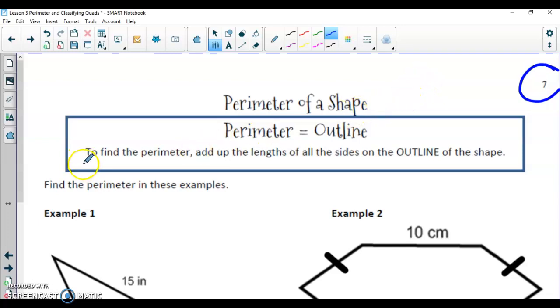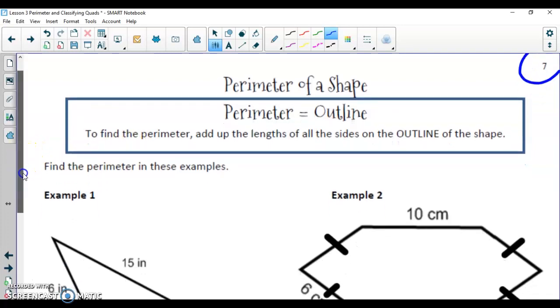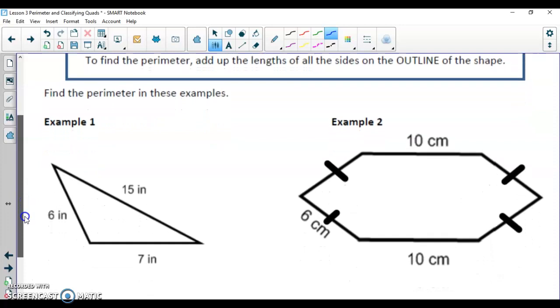When we talk about perimeter of a shape, perimeter is like an outline. If you think about perimeter as basically taking a Sharpie and drawing a line around the outside of your shape that you're working with. To find perimeter, you're going to add up all the lengths of all the sides on the outline of the shape.